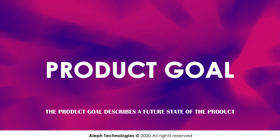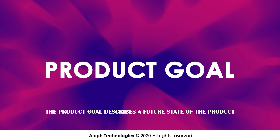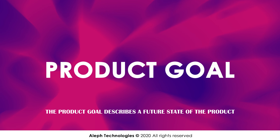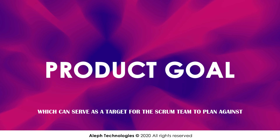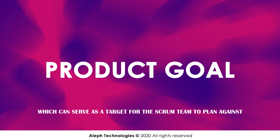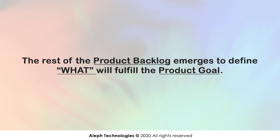Commitment: Product Goal. The product goal describes a future state of the product, which can serve as a target for the Scrum team to plan against. The product goal is in the product backlog. The rest of the product backlog emerges to define what will fulfill the product goal.